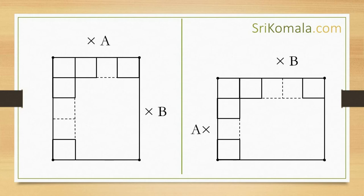If we compare the rectangle on the left side and the rectangle on the right side, we can clearly see that both rectangles are the same. Therefore, from this, we can conclude that A times B is equal to B times A.